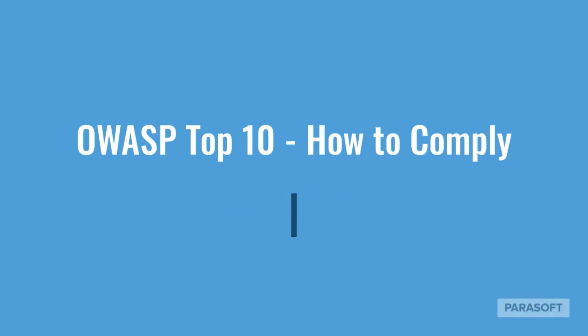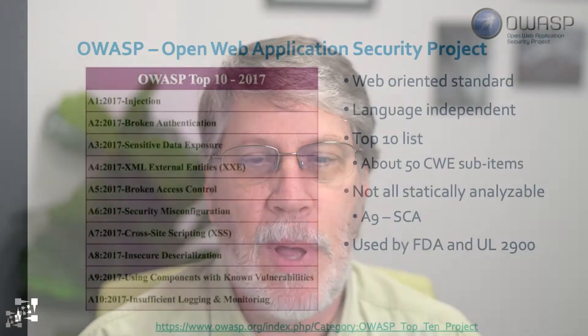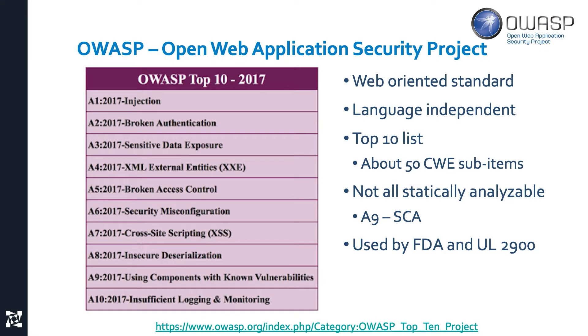OWASP is the Open Web Application Security Project. They're well known for what's called the OWASP Top 10, which is a list of things that are very common and likely to happen to you in your web applications. It's a web-oriented standard and luckily it's language independent, so whether you're programming in C, Java, .NET, etc., it will still work well for you.